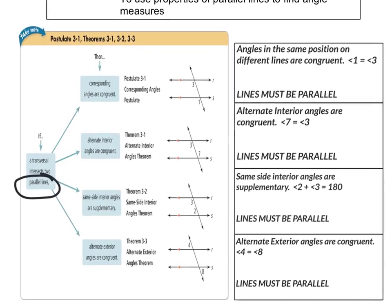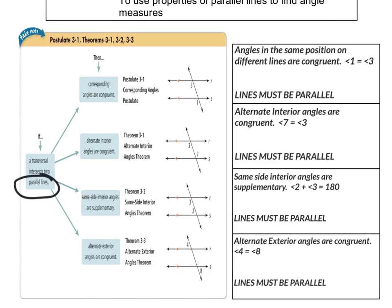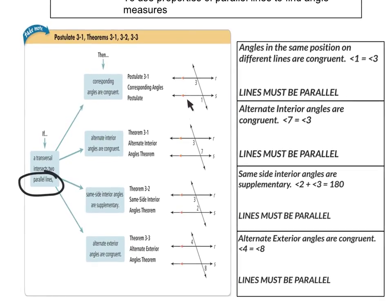Postulate 3-1, the Corresponding Angles Postulate, says that corresponding angles are congruent if the two lines are parallel. So angle three and angle one would be exactly the same degrees. Angles that are in the same position on different lines are congruent to each other. The biggest key is the lines have to be parallel — if the lines are not parallel, these things are not true.